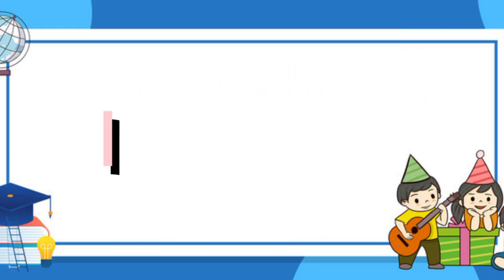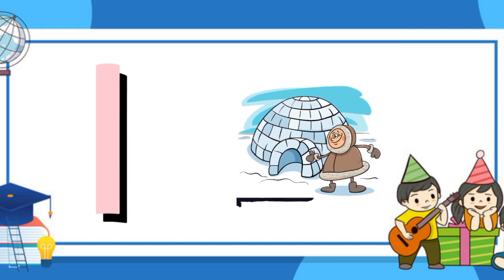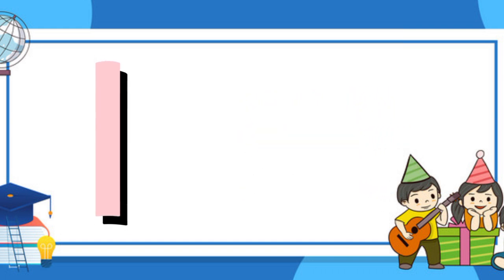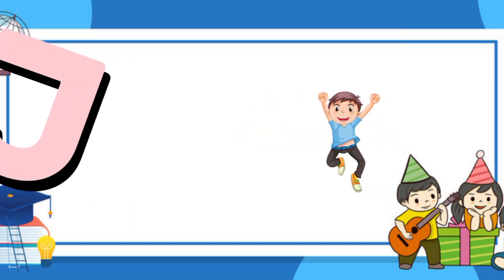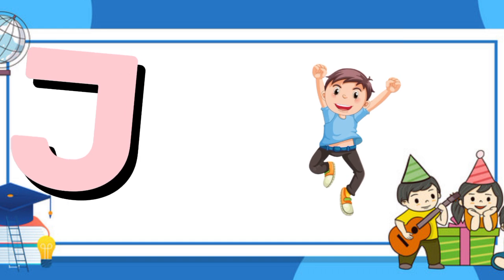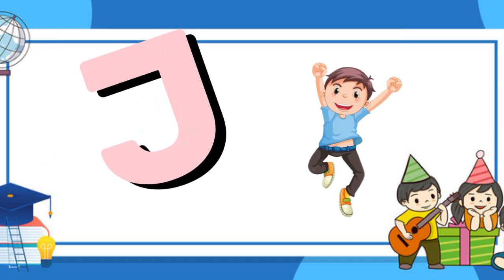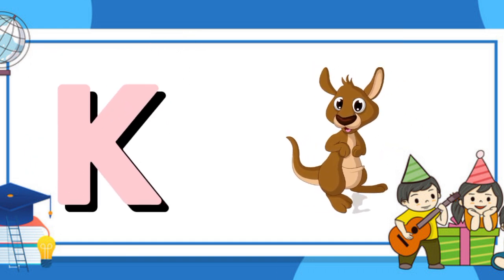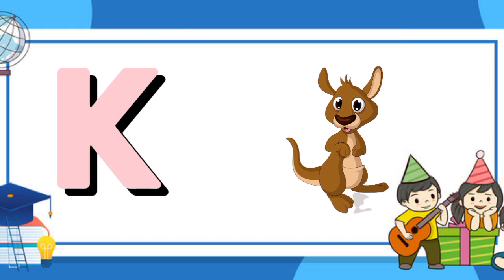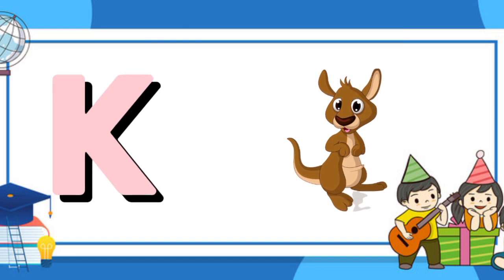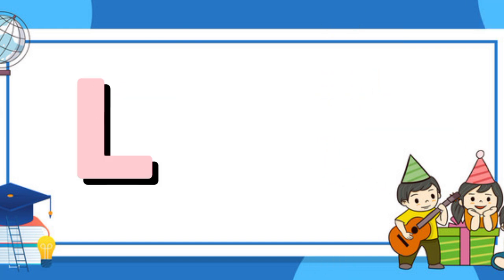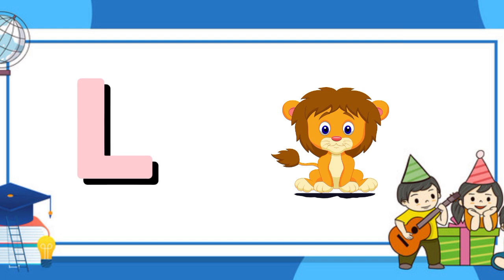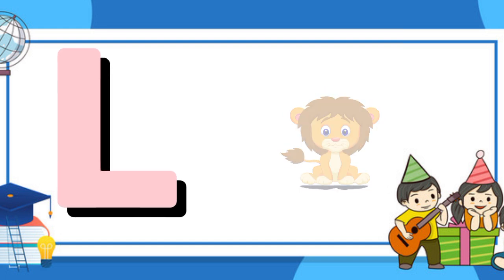I is for igloo, i-i-igloo. J is for jump, j-j-jump. K is for kangaroo, k-k-kangaroo. L is for lion, l-l-lion.